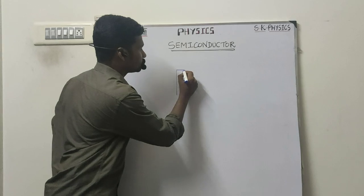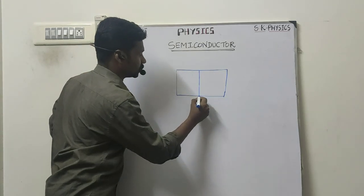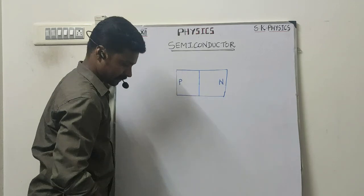So let's take one junction diode. You know that it is a p-region. This is known as n-region.